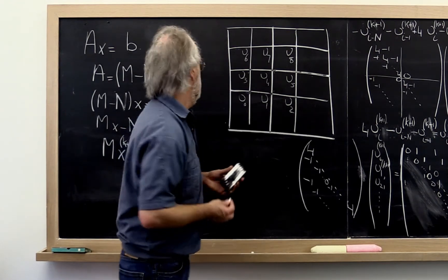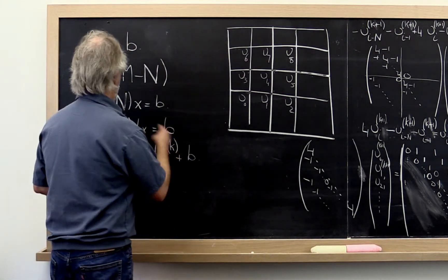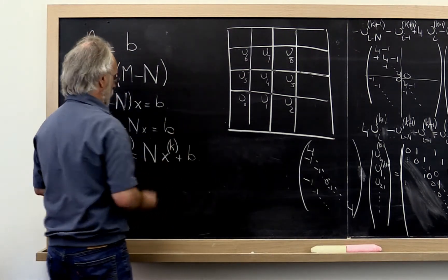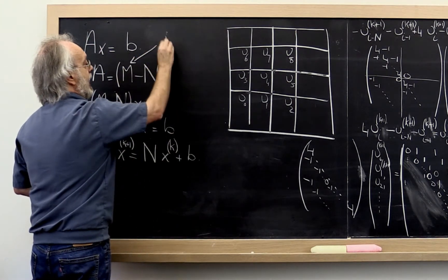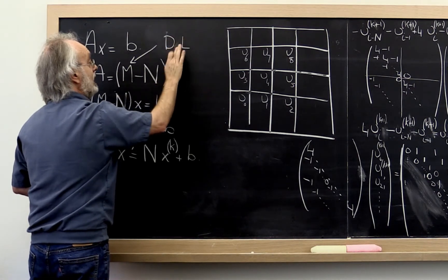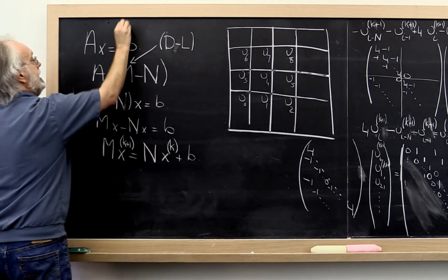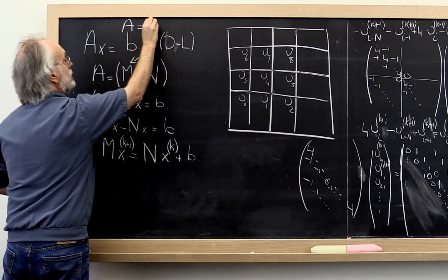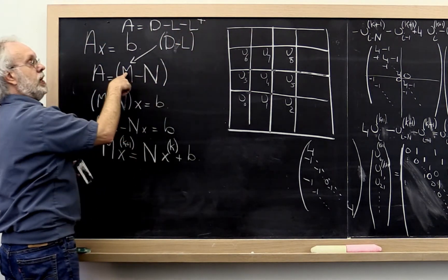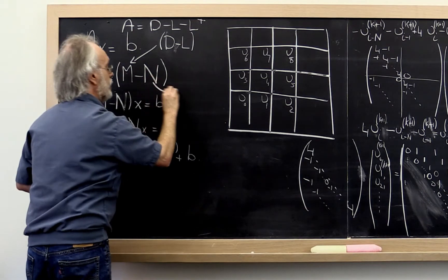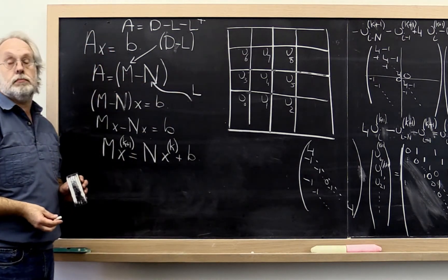Now what does that mean? What that means is that our splitting here now becomes where n is the diagonal plus the strictly lower, sorry, minus the negative of the strictly lower triangular part. Remember that A we split into D minus L minus L transpose. So this becomes your M, and your N becomes L.